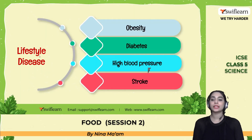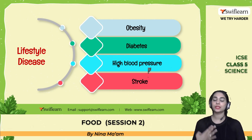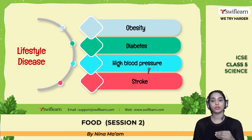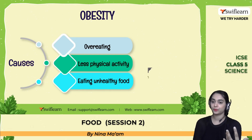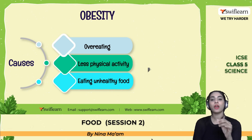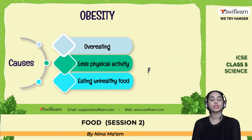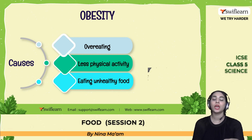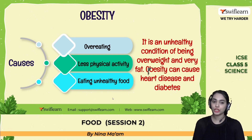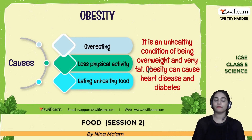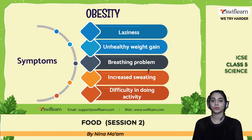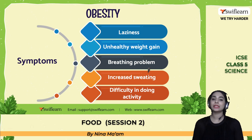Lifestyle diseases include obesity, diabetes, high blood pressure, and stroke. Obesity is a disorder in which the body contains abnormal levels of fat, causing the body weight to be much higher than normal. Causes include overeating, less physical activity, and eating unhealthy food. Obesity can cause heart disease and diabetes, and apart from physical defects, it also affects psychological and social well-being.